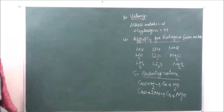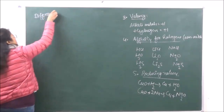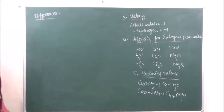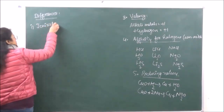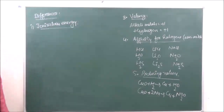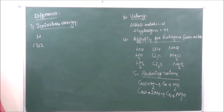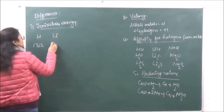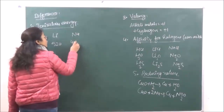Now, what are the differences with alkali metals? The first difference is in ionization energy. The ionization energy of hydrogen is very, very high — 1312 kJ per mole — whereas that of Lithium is only 520 kJ per mole, and Sodium is still lower at 495 kJ per mole. There is a marked difference between the ionization energy of hydrogen and the alkali metals.